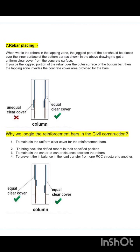Why do we joggle the reinforcement bar in civil construction? First, to maintain the uniform clear cover of the reinforcement bar. Second, to bring back the drifted rebar to their specified position. Third, to maintain the center-to-center distance between the bars. Fourth, to prevent the imbalance in the load transfer from one RCC structure to another. In the figure you can see equal and unequal clear covers in columns with their description.